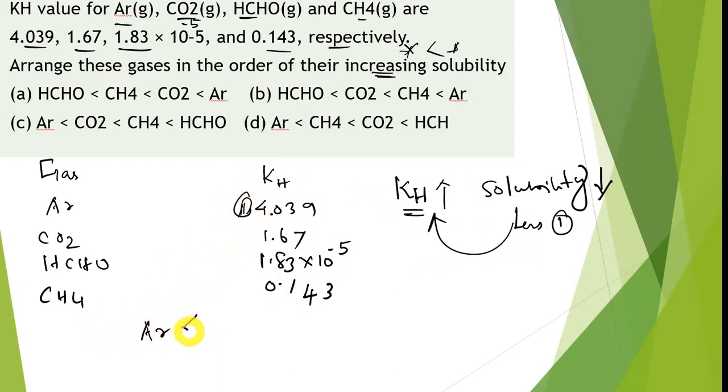Argon is less than the next highest value 1.67, CO2, and next highest value 0.413 that is CH4, and next highest value that is HCHO. Argon is less than carbon dioxide is less than methane is less than formaldehyde, based on the Henry's value.